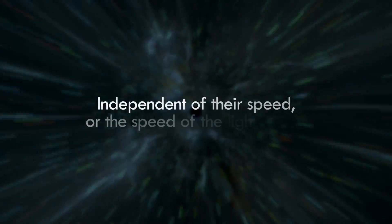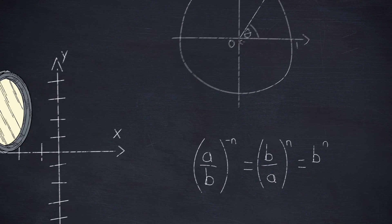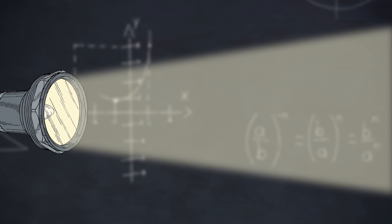Intriguingly, this speed is the same for anyone measuring it, independent of their speed or the speed of the light source. This constancy, unlike other observable phenomena or geometrical aspects of the universe, renders the speed of light particularly special.